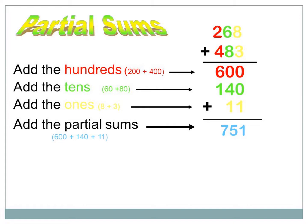How can we use it? Look at the picture and you will find 268 plus 483. The first step is to add the hundreds. Look at the hundreds place. In the first number, the hundreds place is 2, or we can say the value is 200. In the second number, it's 400. So add the hundreds first.